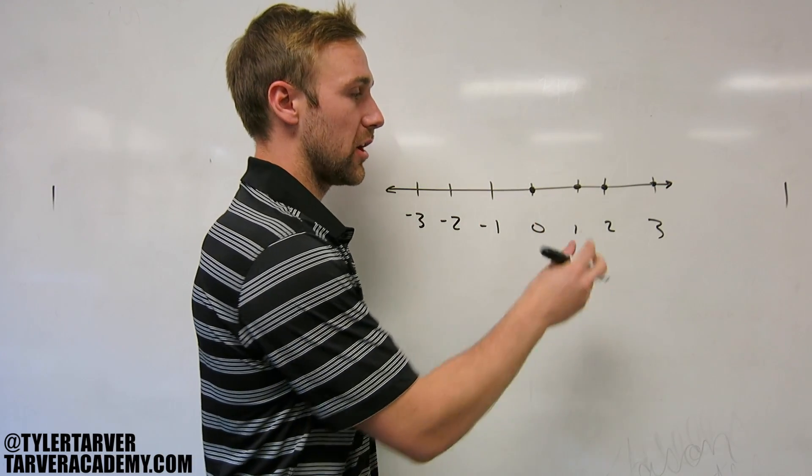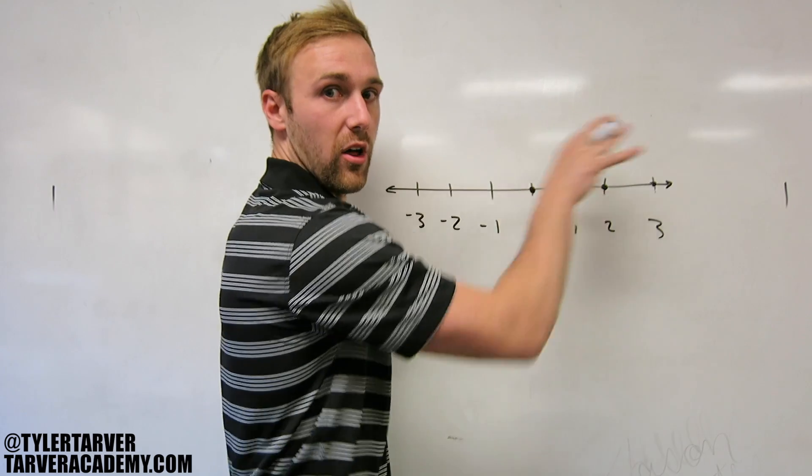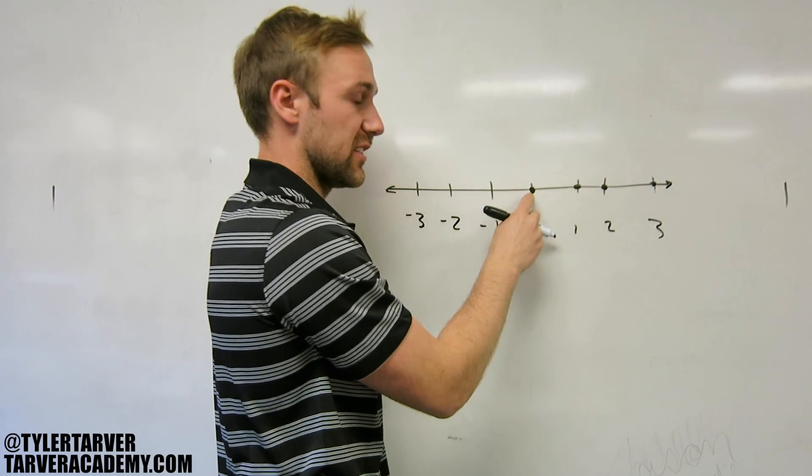You know that your natural numbers are your 1, 2, 3, 4, all the way up, going this way. Whole numbers are those numbers plus zero.